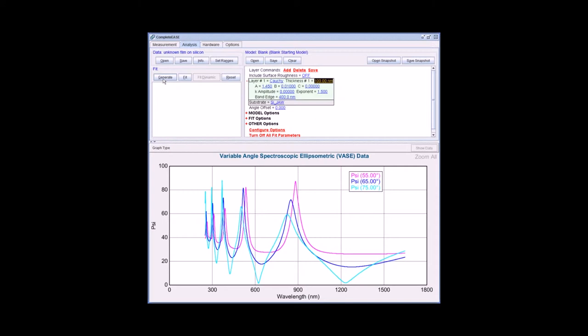Once you have a starting thickness guess, click Generate in the Fit panel. From here we can make some educated adjustments to the model that will give us closer starting values.